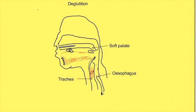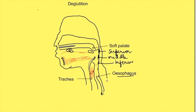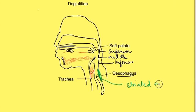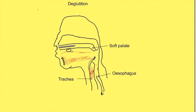Before going into details of each phase, we should know some structural details. The posterior wall of the pharynx has three different sphincters: superior, middle, and inferior. The esophagus is mostly smooth muscle, but the initial one-third portion of the esophagus is striated muscle.